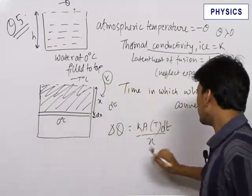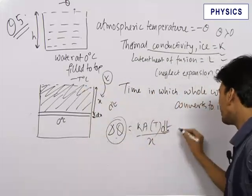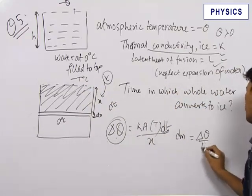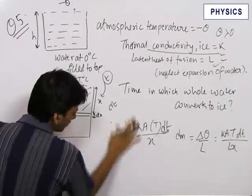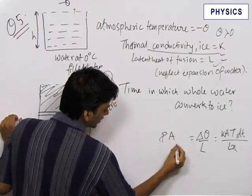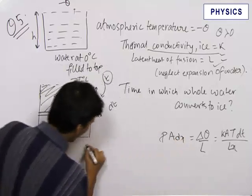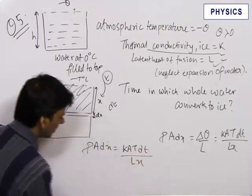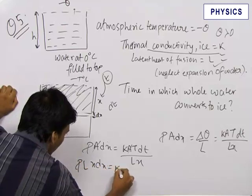So the heat current becomes k·t·dt/x, where t replaces theta to avoid confusion. Due to this small amount of heat, a small mass of water will be converted into ice using the latent heat of fusion. Therefore the small mass is delta-Q divided by L, which equals k·A·t·dt divided by L·x. This small mass of water converted can also be written as rho of water times the area of cross-section times dx, since this thin layer of water has been converted into ice.